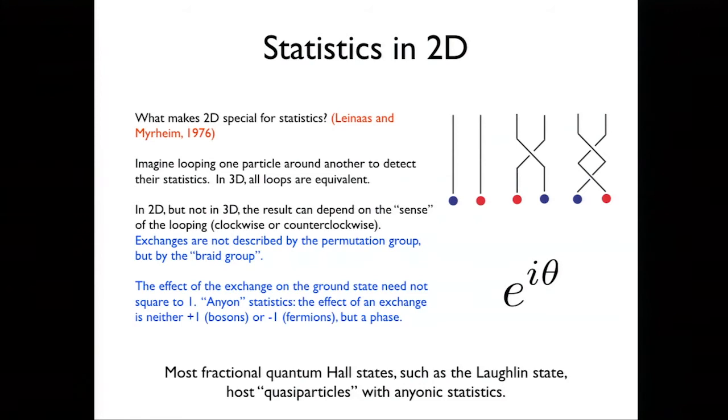If I'm in a three-dimensional world, then moving it this way, I could imagine lifting the loop up, flipping it over, and putting it back down. Linus and Merheim realized that in 2D, maybe you could have a system of particles where what phase you got on exchanging particles was sensitive to whether you move them clockwise or counterclockwise. In the simplest case, which is what happens in the Laughlin state, when we exchange two of these fractionally charged quasiparticles, we're not going to get a plus one or minus one, which would be bosons or fermions. We're going to get a phase factor like that.